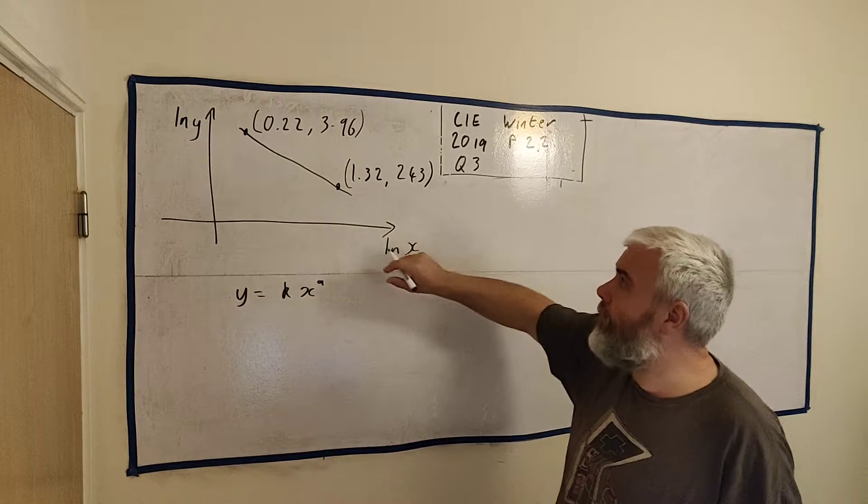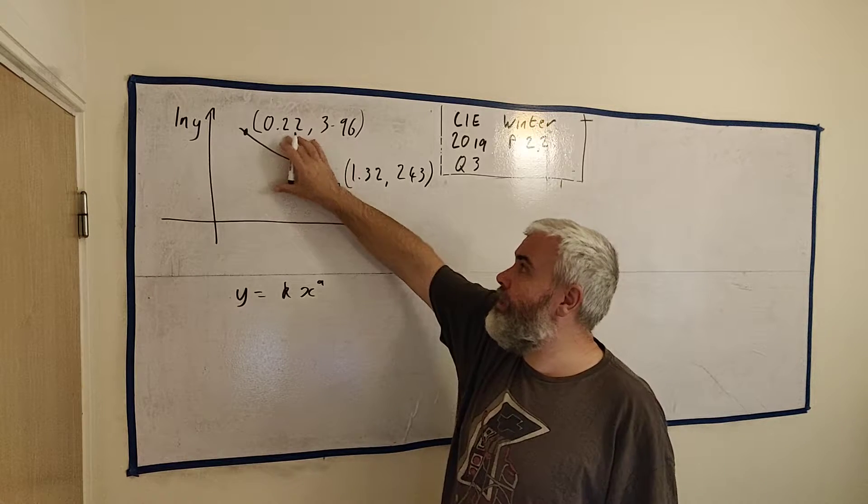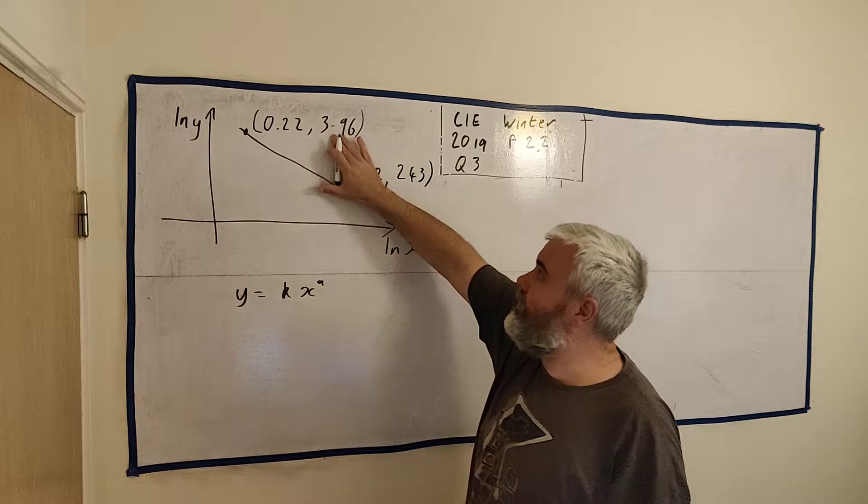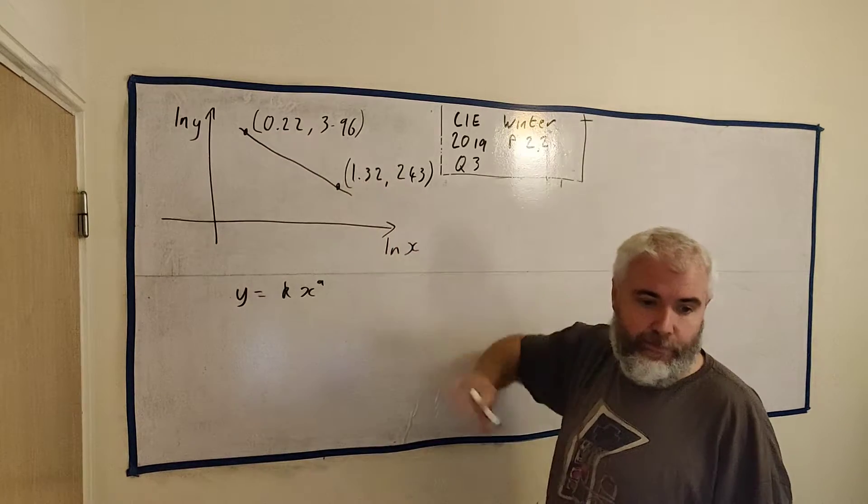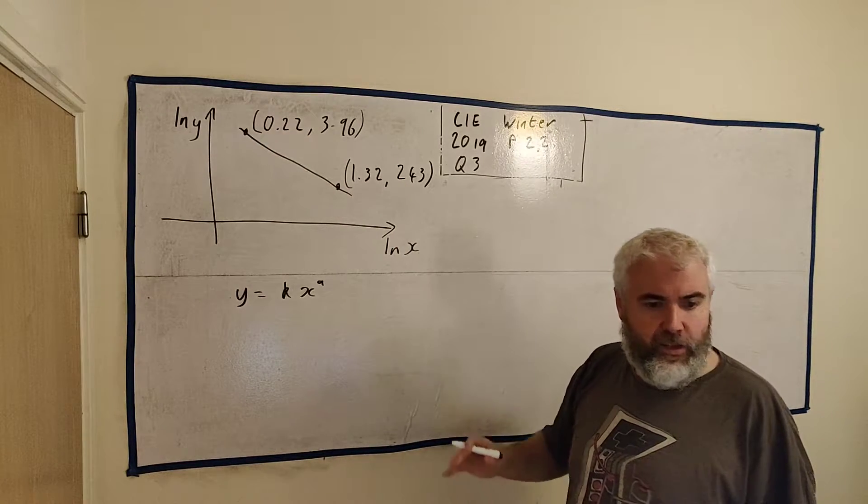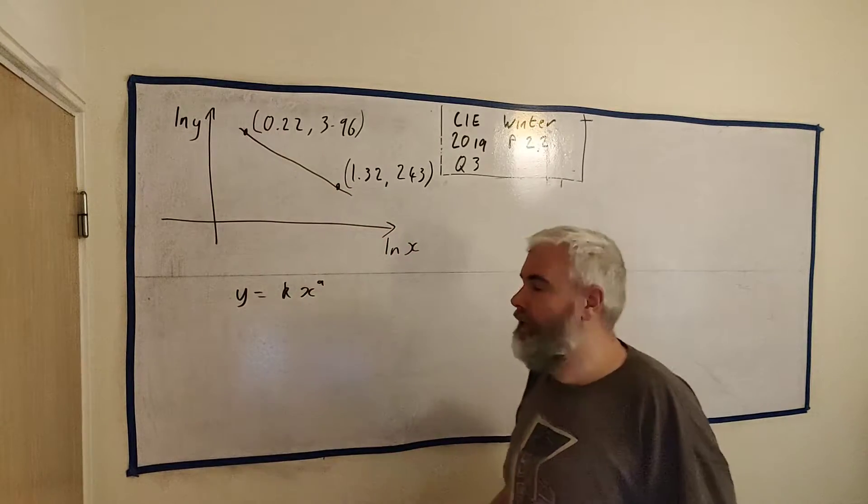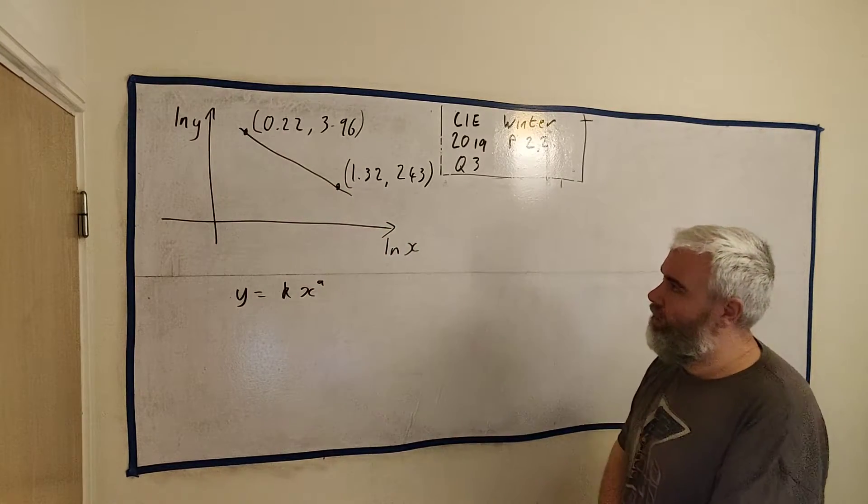Now they give us lots of information. They give us this information for natural log y is this number, natural log x is this number at this point and so on here at this point. And they tell us that this does make a straight line. That's important. We need to know that is a straight line.